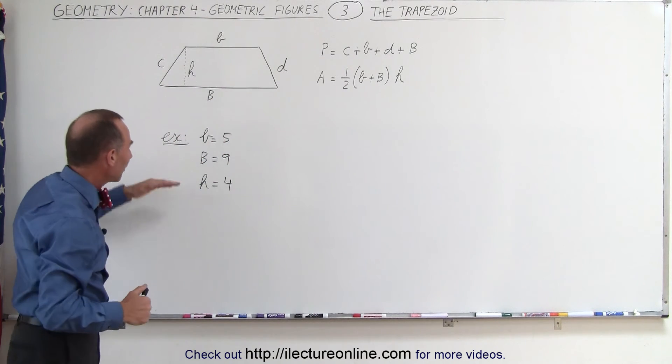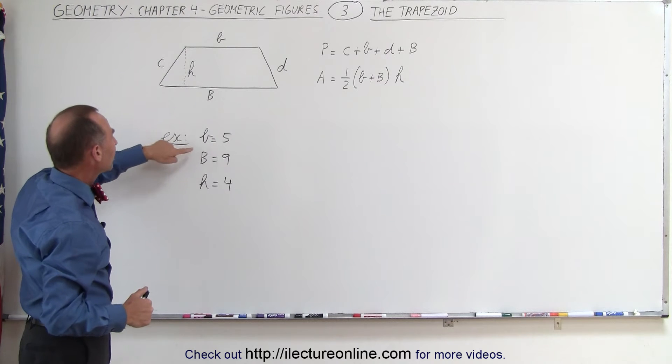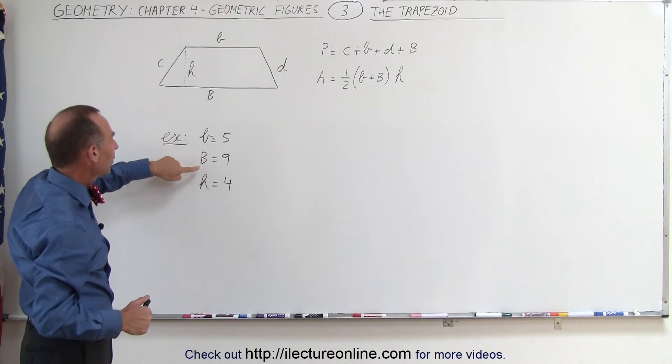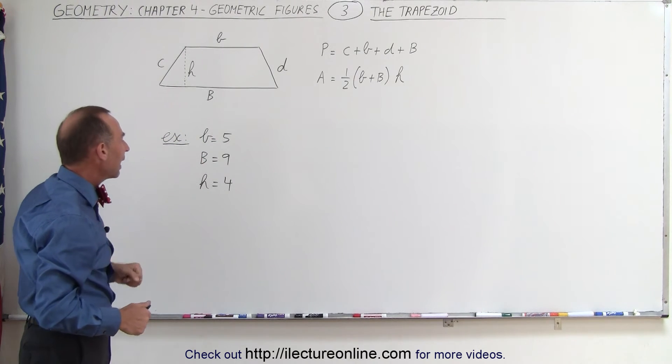Let's do an example. Here we have a trapezoid that has small b equal to 5, big B equal to 9, and height equal to 4.